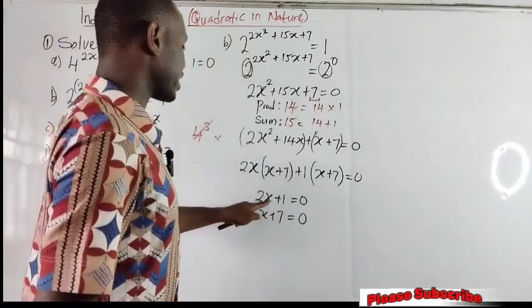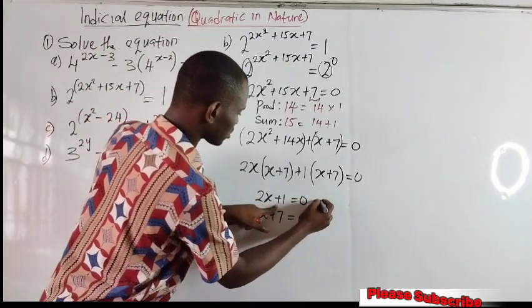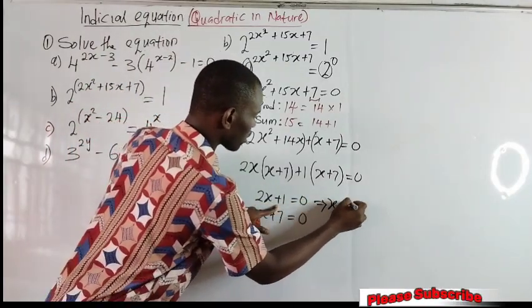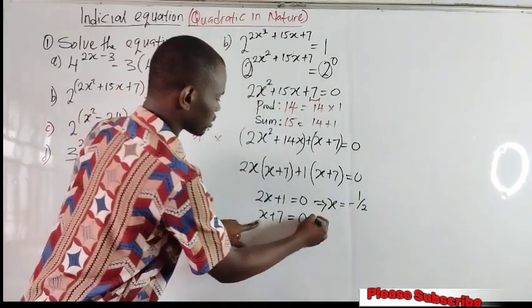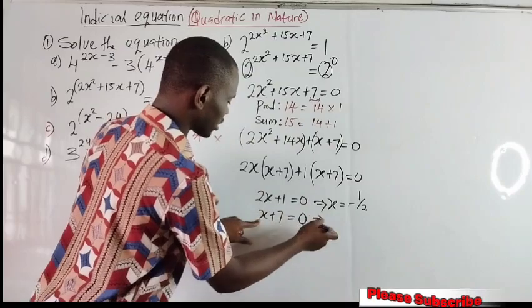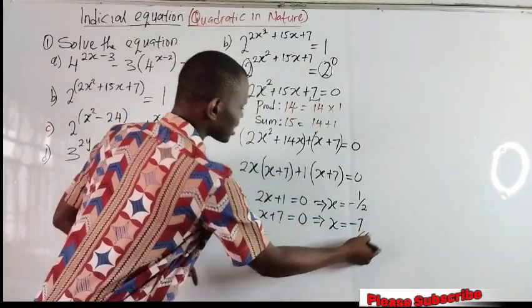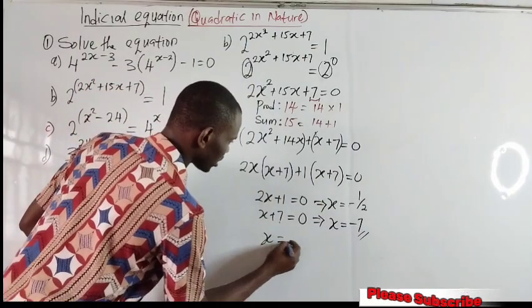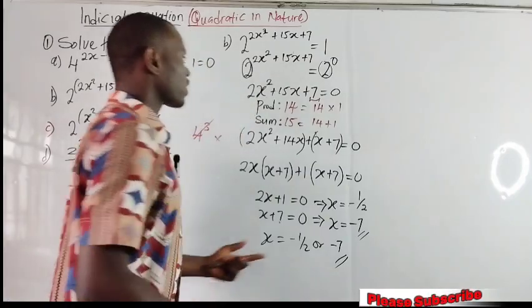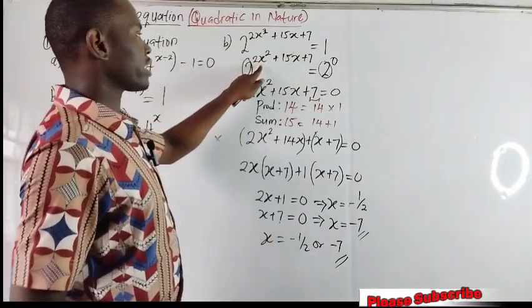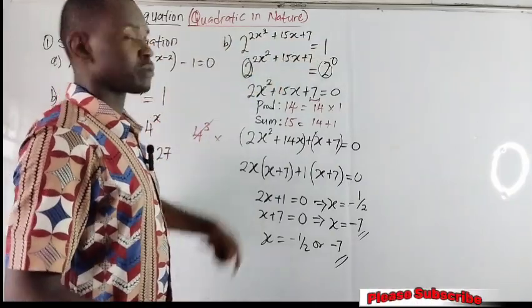We make x the subject of the formula. From 2x plus 1 equal to 0, we have x equal to minus 1 over 2. From x plus 7 equal to 0, we have x equal to minus 7. So we have gotten the values of x to be either minus 1 over 2 or minus 7. That is the solution to the quadratic equation, which is the power of the initial exponential equation.